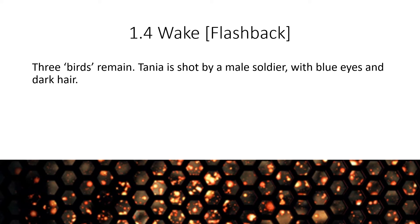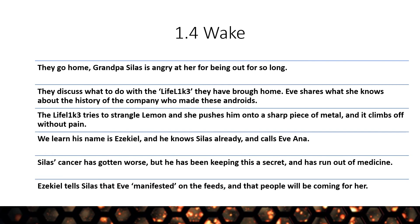Another flashback: three birds covered in blood in a cage — Tanya is shot by a male soldier with blue eyes and dark hair. Back home, Grandpa Silas is angry they've been out so long. They discuss what to do with the man with the slot and no arm. Eve suggests he might be a lifelike, based on her memory implant installed by Grandpa Silas. Then the lifelike suddenly jumps up and tries to strangle Lemon. Eve pushes him onto sharp metal, he climbs off without visible pain but with blood-like discharge. His name is Ezekiel — and he already knows Silas and calls Eve 'Ana,' which is very strange. We also learn Silas's cancer has gotten worse and he's run out of medicine.